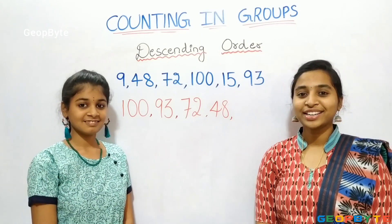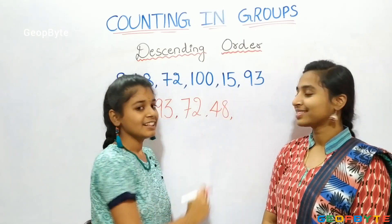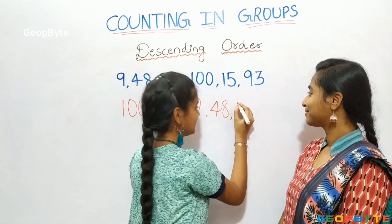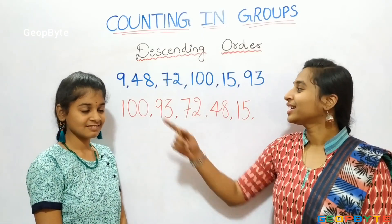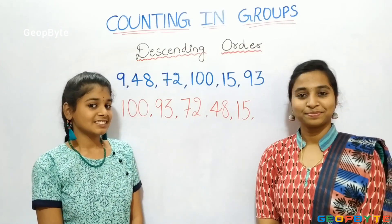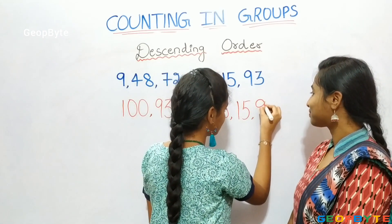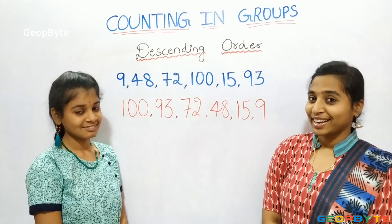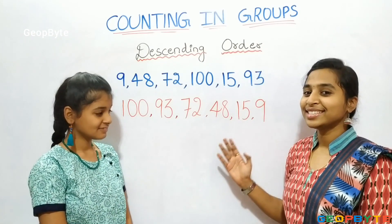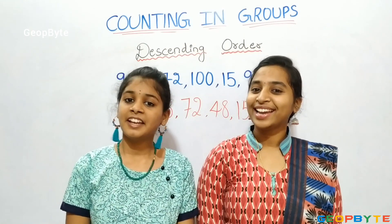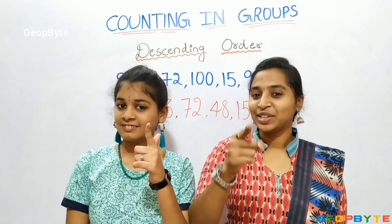Which is the smaller number in this arrangement? Yes, correct answer — 15 is the smaller number. Let us write. Which is the smallest number? Yes, correct answer — 9 is the smallest number. Let us write. See kids, now we have arranged the numbers from the largest to the smallest number. This is descending order. Hey kids, there is a small activity for you. Try to practice descending order at your home.